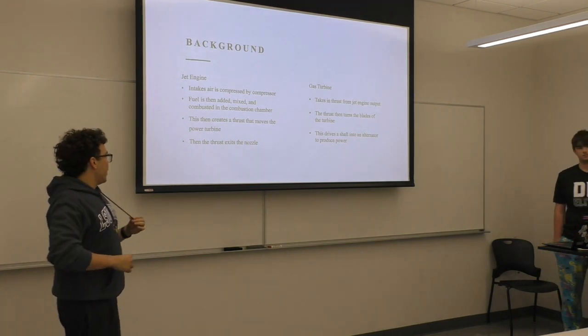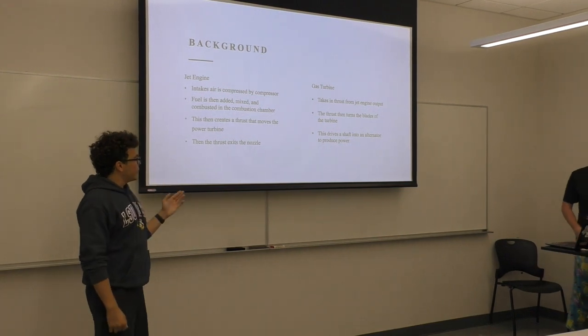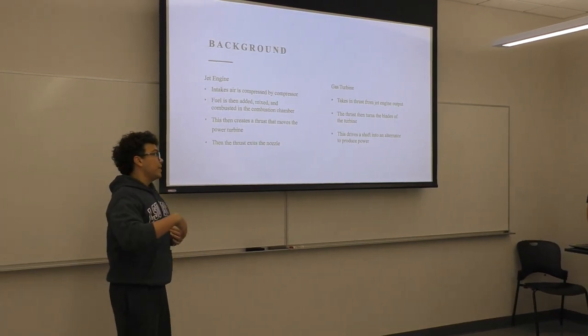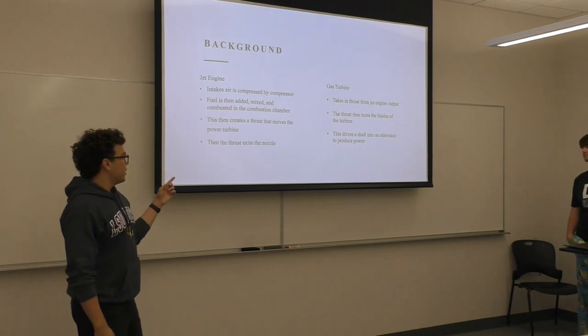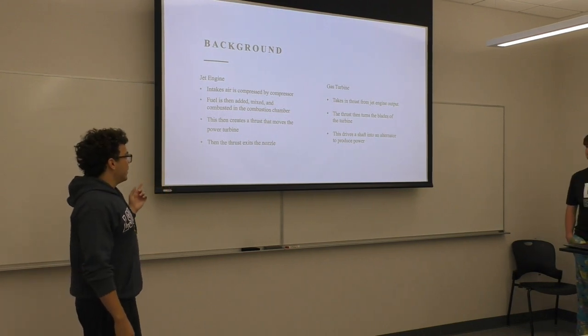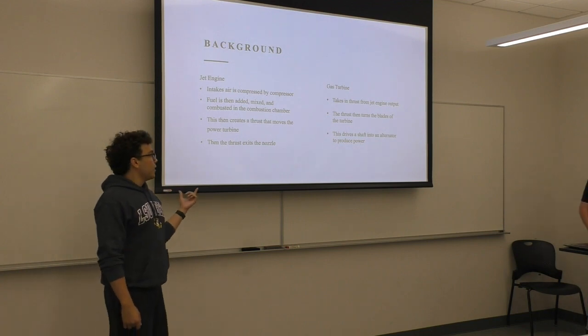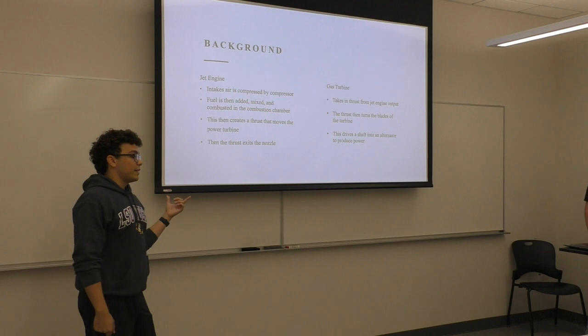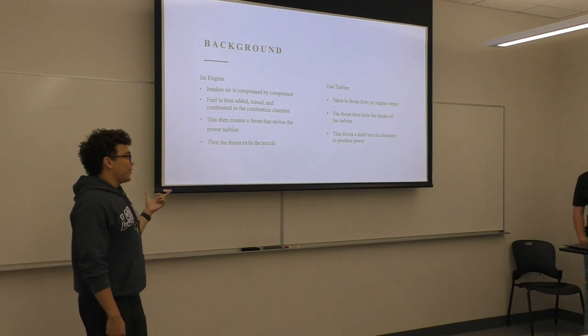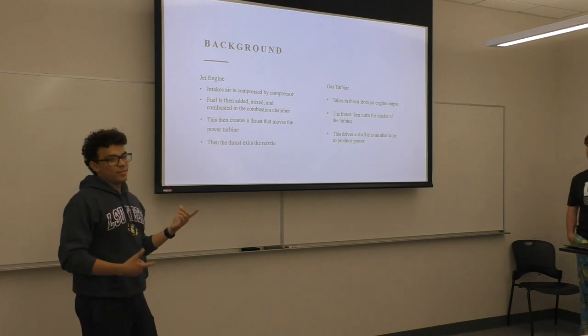And from that, a thrust is created that moves the power turbine. And then it exits out. But it doesn't just exit out into ambient air. It exits out into the gas turbine. And from the gas turbine, it takes a thrust output and makes that an input to turn another turbine. And that creates shaft work that creates an alternator and produces power.